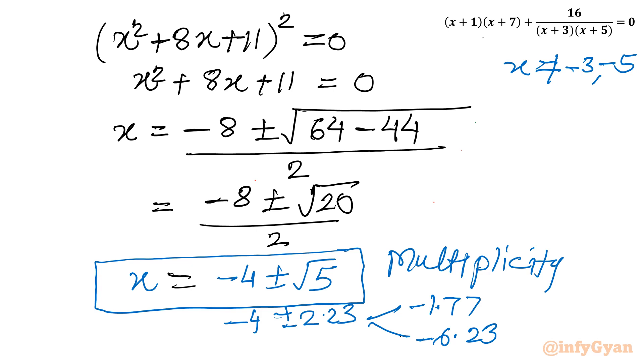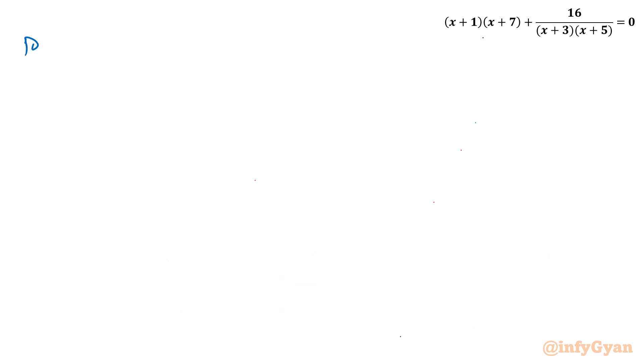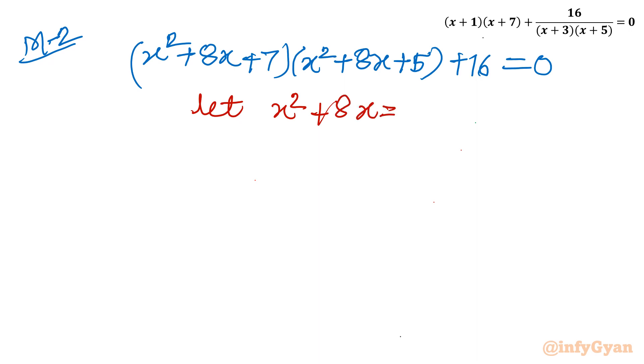Now I will use substitution method. Let me write method 2, substitution. Our original equation was x square plus 8x plus 7 times x square plus 8x plus 15 plus 16 equal to 0. Now I will use substitution which is straight away clear. Let x square plus 8x equal to a. So equation will become a plus 7 times a plus 15 plus 16 equal to 0.